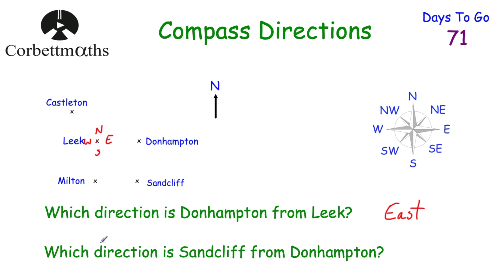Next question: which direction is Sandcliffe from Donhampton? Pause the video and think about it. If we're at Donhampton, we've got north, east, south, and west. As you can see, Sandcliffe is south of Donhampton. So the answer is south. Well done if you got those.